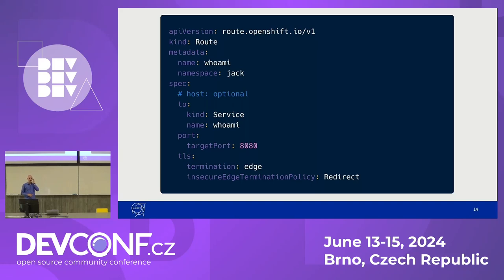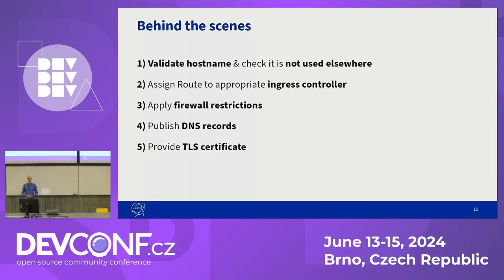Essentially, what a route describes is where traffic should be routed to — in this case, a particular service — and it describes some parameters about how TLS should be set up. So in this case, it's an encrypted connection that gets terminated by the ingress controller. We can see that we have not specified a host yet, because we will come to that later. Behind the scenes, we need to do several things for this website to actually appear to the user. Firstly, we need to check if the hostname that the user chose complies with our restrictions and fits into our setup and computing environment.